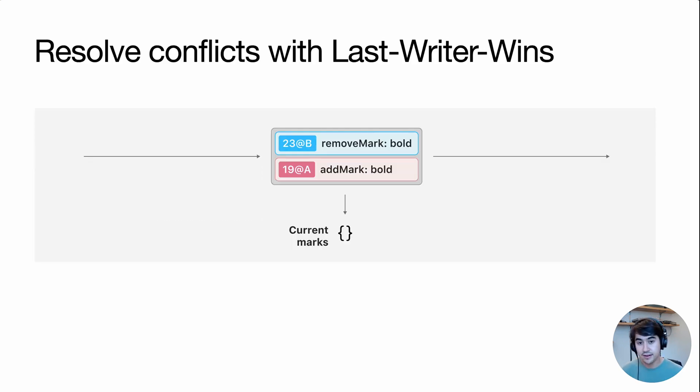A final detail is considering what happens when different operations conflict with each other. For example, here we have an operation to add bold and remove bold formatting on the same span of the document. In these cases, we use a standard LastWriterWins conflict resolution strategy, which means that we can compare logical timestamps between these operations to pick one of them to win deterministically across all of our replicas.